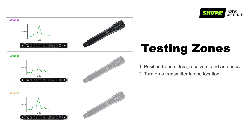Turn on one transmitter in only one performance area and set it to its highest RF output power. Make sure all other transmitters are off. Next, perform RF spectrum scans using your networked receivers in Wireless Workbench.